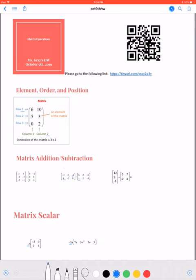It means I'm going to multiply everything by negative 5. So I get a matrix of 15, 0, 0, and negative 5 times 5 is negative 25.